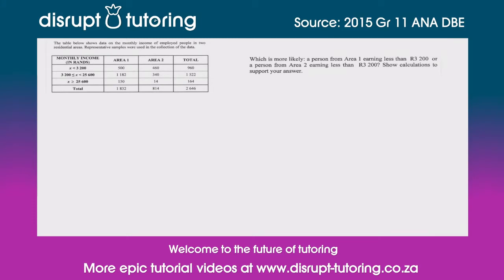So as you can see here, we've got this table and it's been divided into two areas and three income categories. With that in mind, they've asked us: which is more likely — a person from area one earning less than three thousand two hundred rand per month, or a person from area two earning less than three thousand two hundred rand per month?